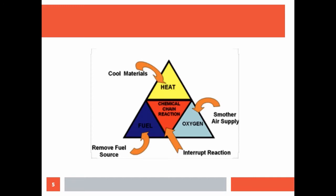When fire brigade men throw a strong stream of water on a building on fire, the burning material gets cooled below its ignition temperature and the fire is extinguished. The water vapor produced also surrounds the burning material and helps in cutting off the supply of air. Firemen extinguish fire by throwing water under pressure on burning things.